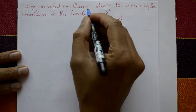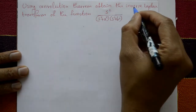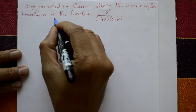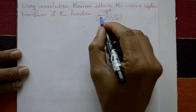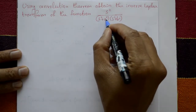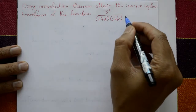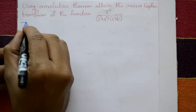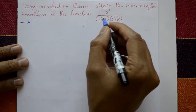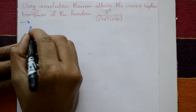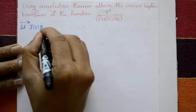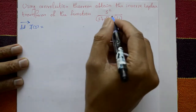Using the convolution theorem, obtain the inverse Laplace transform of the function s² / [(s²+a²)(s²+b²)]. Now for the solution, let F̄(s) be the first factor.